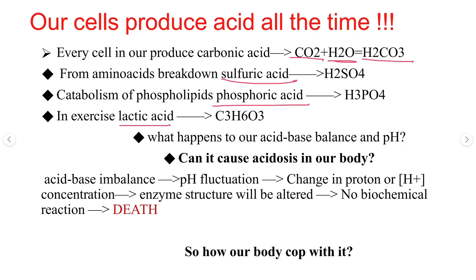Since so much acid is being produced in our body, will it change the pH? Will it cause acidosis? Our body has many enzymes that only work at a specific pH of 7.4. If acid disturbs the acid-base balance, the pH changes. A change in pH means a change in hydrogen ion concentration, which alters enzyme structure, denatures enzymes, stops biochemical reactions, and ultimately leads to death.